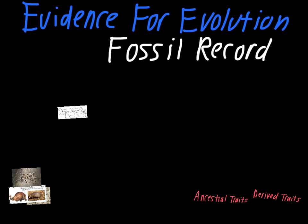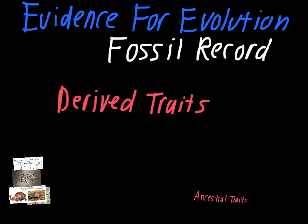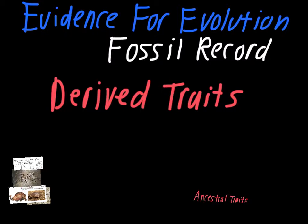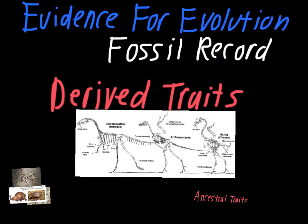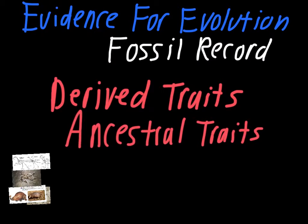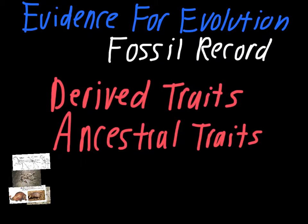That wraps up the main fossil evidence. The last thing here involves two quick terms. The first is derived traits — these are traits that are new, derived from some kind of change in the environment. For Archaeopteryx, the feathers it's developing are a derived trait because they're different from its ancestral species. The flip side is ancestral traits — things Archaeopteryx had in common with its ancestors, like the same head and neck structure, similar teeth, similar lower limbs. Even modern birds have ancestral traits in common with dinosaurs, like egg laying and scaly skin.